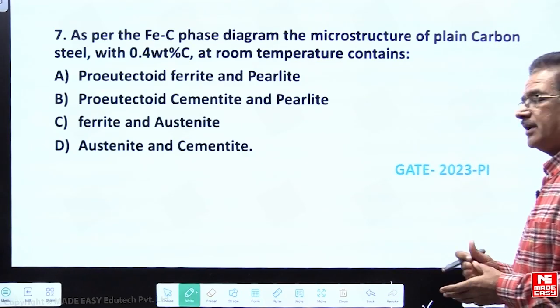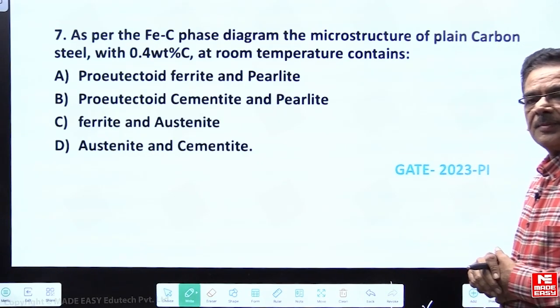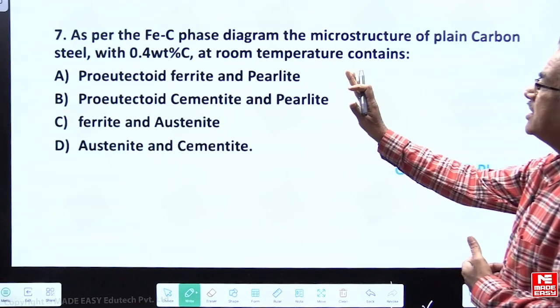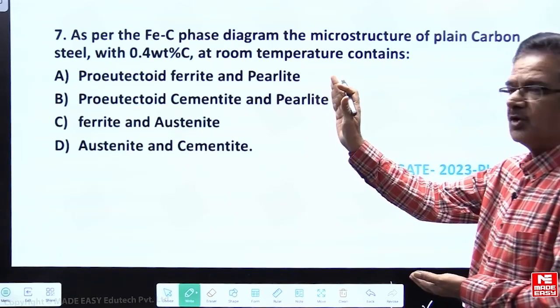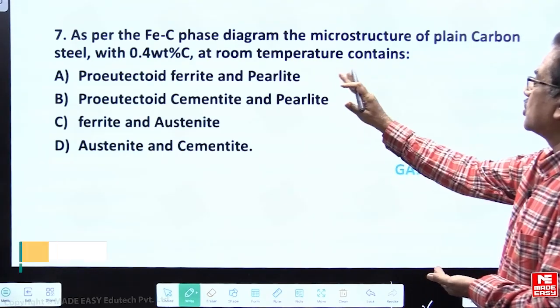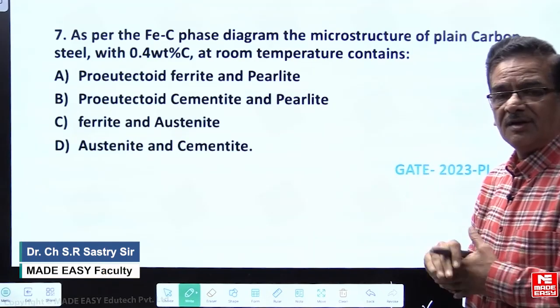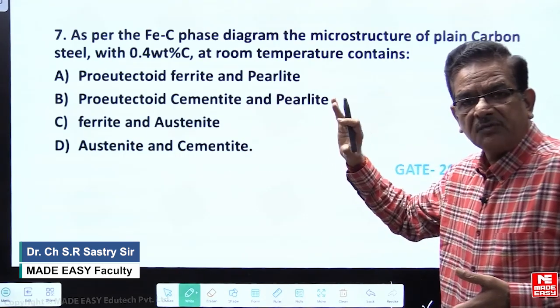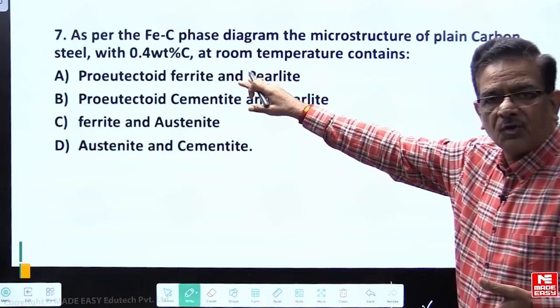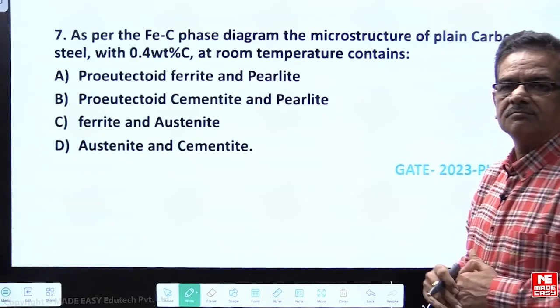This is yet another question that appeared in GATE 2023 PI paper. As per the iron-carbon phase diagram, the microstructure of a plain carbon steel with 0.4 weight percentage of carbon at room temperature contains what type of microstructural phases will be present in 0.4% carbon steel. This is the question.